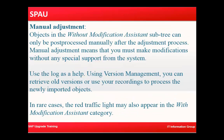Manual adjustment: objects in the without modification assistant sub-tree can only be post-processed manually after the adjustment process. Manual adjustment means that you must make modifications without any special support from the system. Use the log as a help using version management — you can retrieve old versions or use your recording to process the newly imported objects.